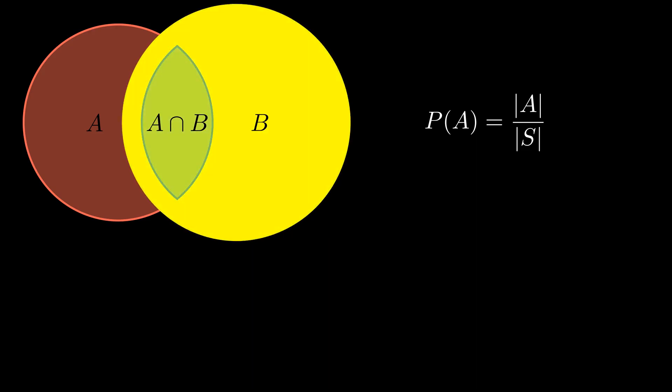Recall that a naive definition of probability is the number of favorable outcomes divided by the total number of outcomes. Because event B has already happened and is the new sample space, we can replace the total number of outcomes with the number of outcomes in B.